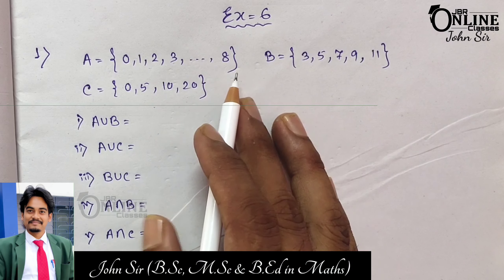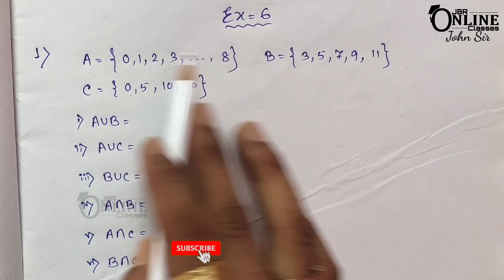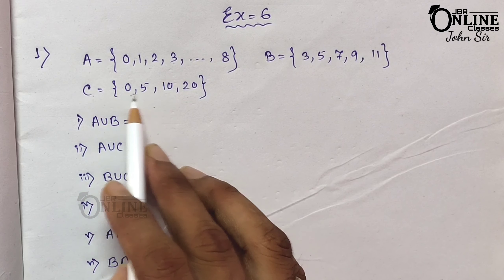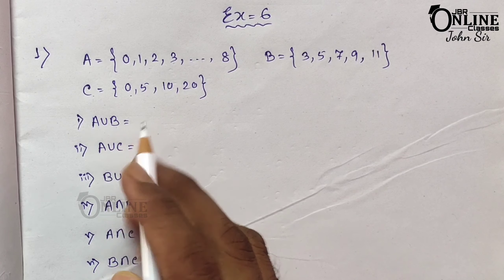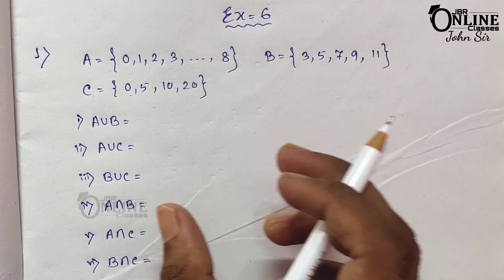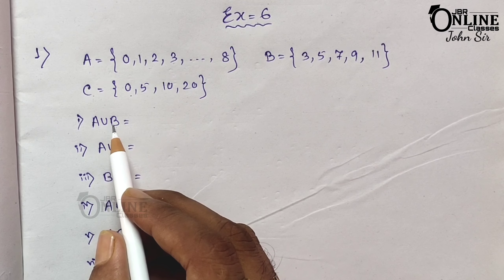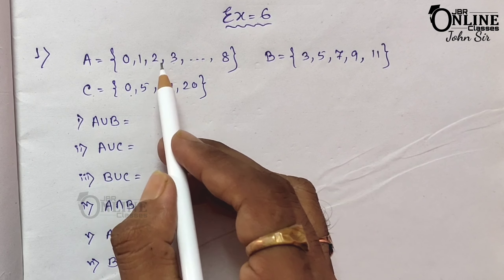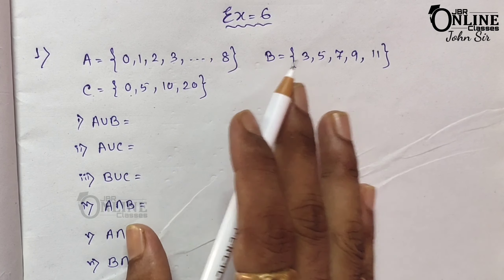In the first problem, if A equals this one, B this one, and C this one — these are the elements of A, B, and C. Now you have to find out A union B. Union means consisting of all elements of these two sets. As here A union B, you have to write down all elements of A and B. Remember one thing: repetition is not allowed.